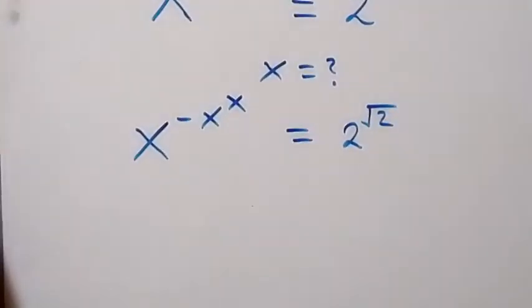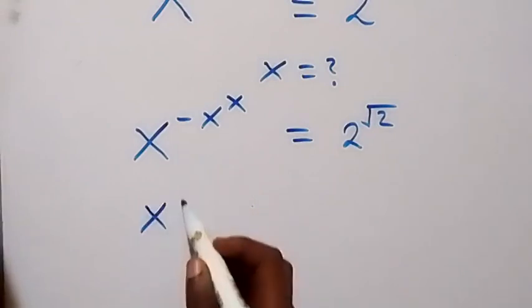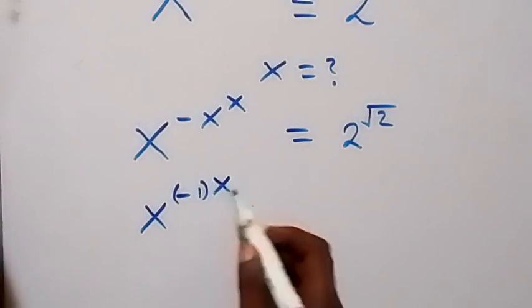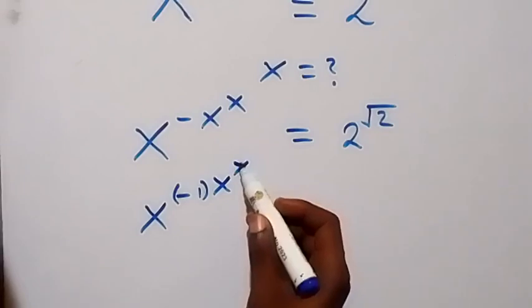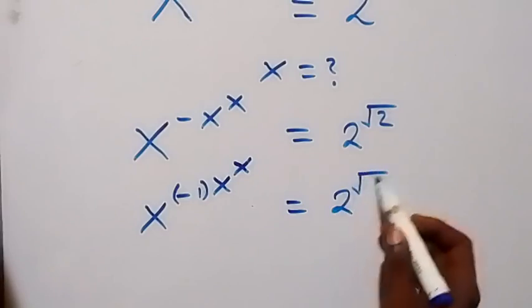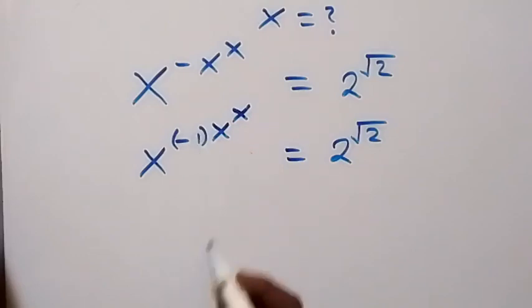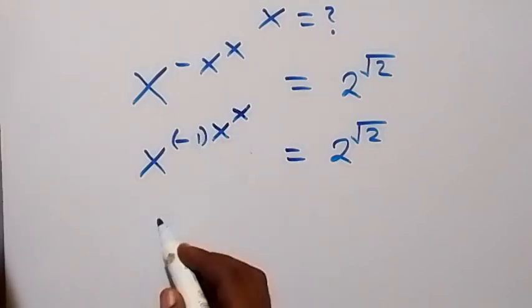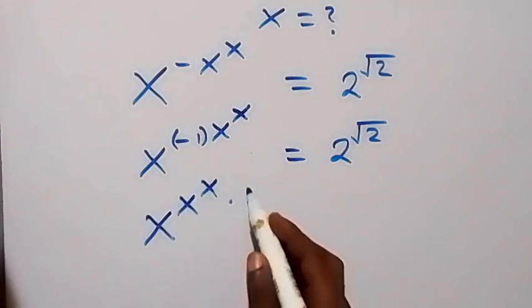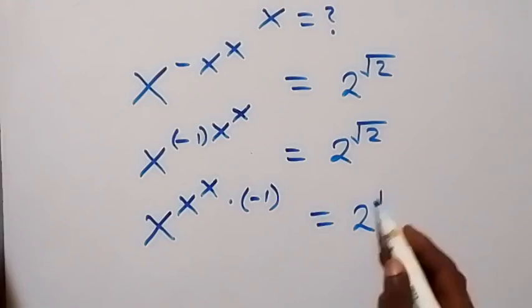We can write this minus here and separate it, saying this is x raised to power minus 1, then raised to power x, then raised to power x, and this equals 2 raised to power root 2. In the next step, this minus 1 we can separate out, and this becomes x raised to power x raised to power x, times raised to power minus 1, which equals 2 raised to power root 2.